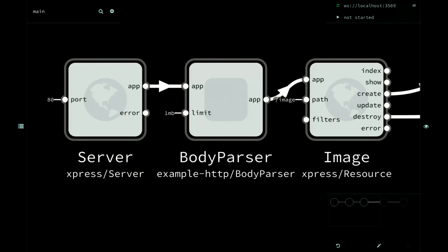So we built visual tools. The same graph shown as text looks like this in our visual editor: you can see the HTTP server, port 80, a body parser that turns incoming JSON or URL-encoded data into native JavaScript objects, and the image resource with all its available ports clearly visible. If you want to handle index — listing image resources — you'd just wire something to that port.